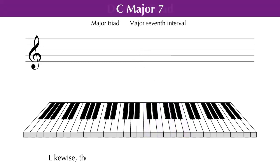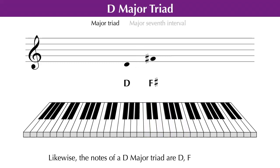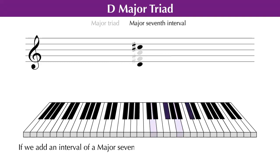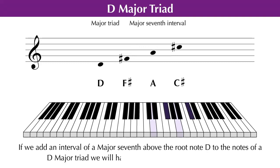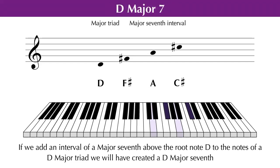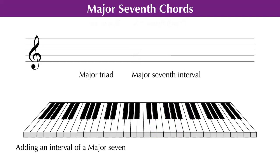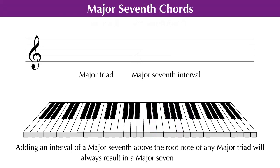Likewise, the notes of a D major triad are D, F sharp, and A. If we add an interval of a major seventh above the root note D to the notes of a D major triad, we will have created a D major seventh chord. Adding an interval of a major seventh above the root note of any major triad will always result in a major seventh chord.